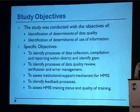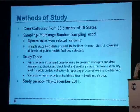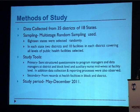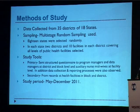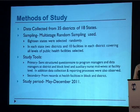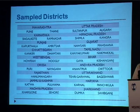The objective of this study was basically to look at the determinants of data quality and use of information. We sampled 35 districts in 18 states, covering almost 10 facilities in each district across all levels of public health facilities. We interviewed different levels of HMIS users in the district health system using semi-structured questionnaires, and we also assessed district and block records and observed the data collection and reporting process.